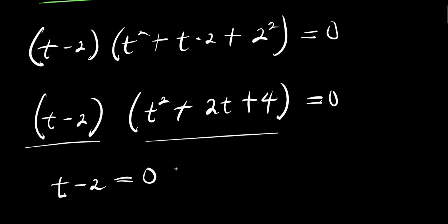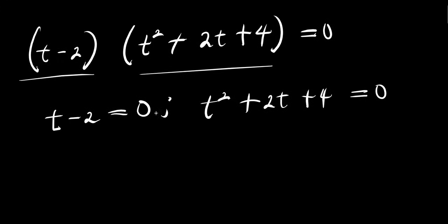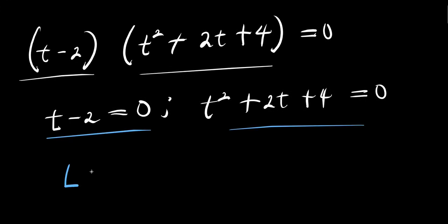So let's equate each of these to zero: t minus 2 equals zero, and we have t squared plus 2t plus 4 equals zero. For the first one, we have t equals 2 — that is my t4.